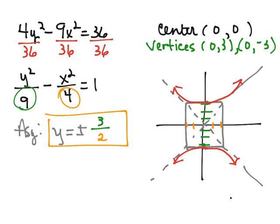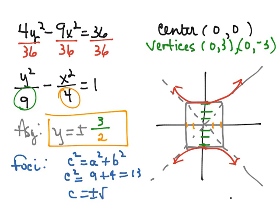And then the last thing that we wanted to find are the foci. And the formula for the foci on a hyperbola is c squared equals a squared plus b squared. So it's the Pythagorean Theorem. So c squared is going to equal 9 plus 4, which is 13.